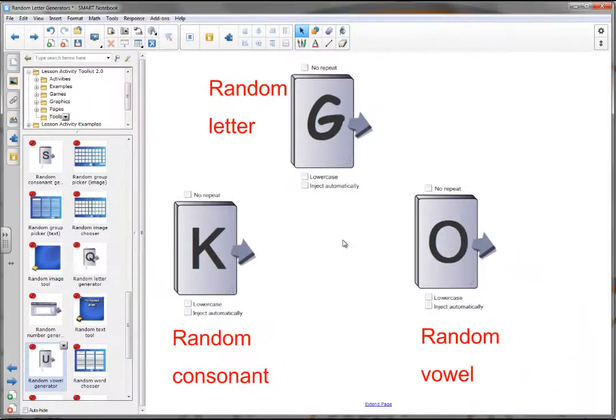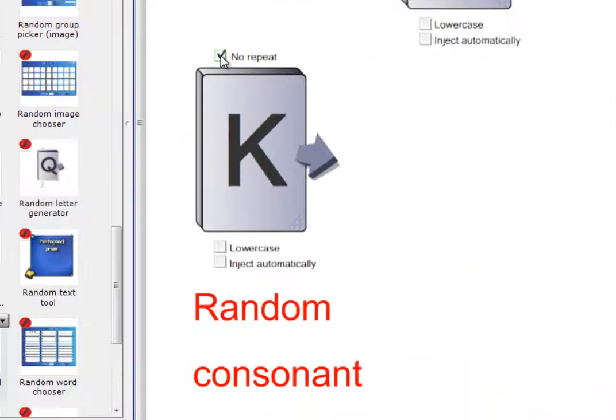So here I have examples of all three. They all have the same layout with three buttons you can press. No repeat is pretty straightforward—means that it won't repeat the letter. If I want them in lowercase I'd click here so they'd come out in lowercase letters, and the third button is to inject automatically.